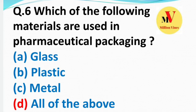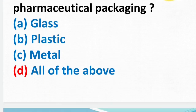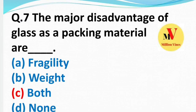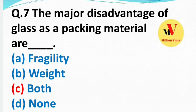Which of the following materials are used in pharmaceutical packaging — glass, plastic, metal, and rubber? The right answer is all of the above. Next: The major disadvantage of glass as a packing material is — the right answer is both fragility and weight.